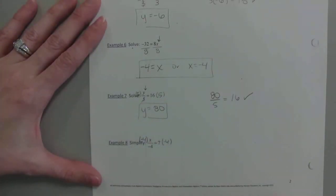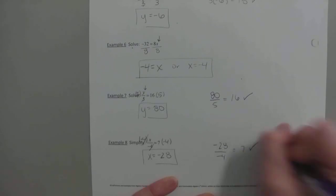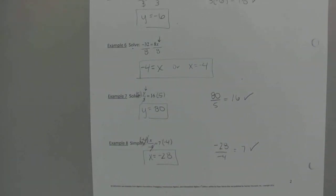Last but not least, this is division. So how do you get rid of division? You multiply. On the left-hand side, negative 4 over negative 4 reduces to 1. So we have x. And 4 times negative 4 is negative 28. And if you want to check, what is negative 28 divided by negative 4? The negatives cancel out. And 28 divided by 4 is 7.